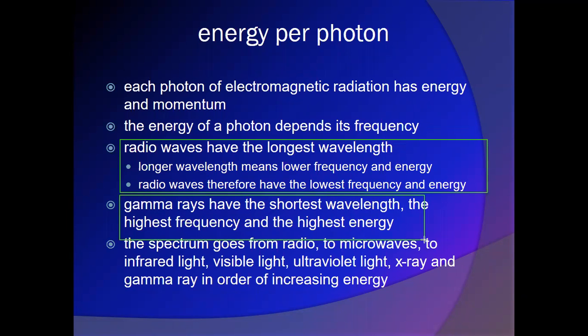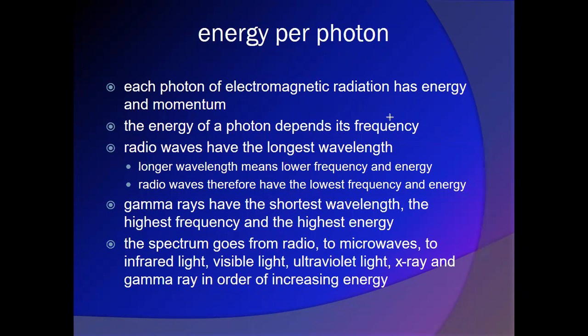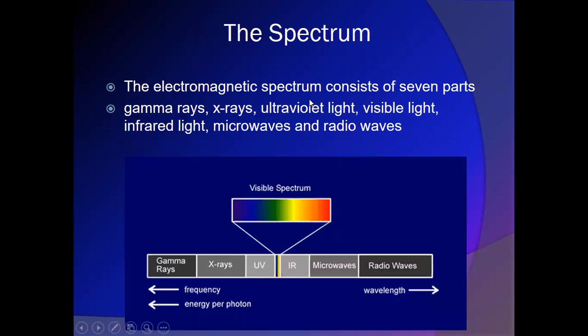Gamma rays, on the other hand, have wavelengths measured in femtometers or picometers. We don't observe phenomena at that small a scale unless we get down to the nucleus of the atom. So gamma rays, with such a short wavelength and high frequency, act more like individual particles — each with quite a bit of energy. Gamma rays are more particle-like, radio waves are more wave-like, and visible light is sort of right in between.